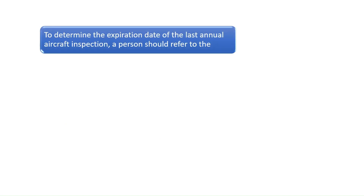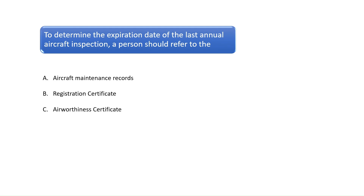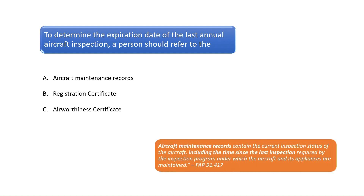Question 2: To determine the expiration date of the last annual aircraft inspection, a person should refer to the? According to FAR Part 91.417, aircraft maintenance records contain the current inspection status of the aircraft, including the time since the last inspection required by the inspection program under which the aircraft and its appliances are maintained. The correct answer is A.